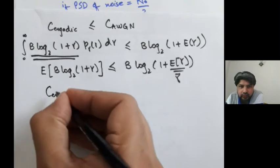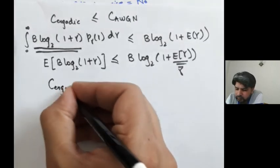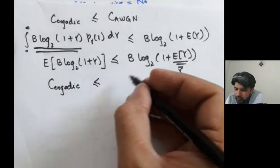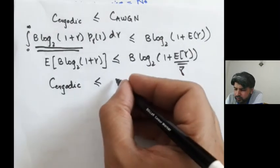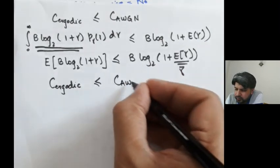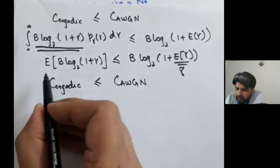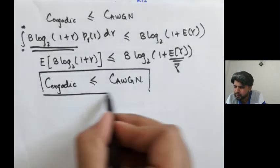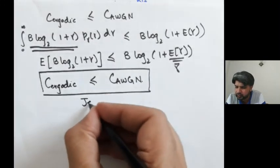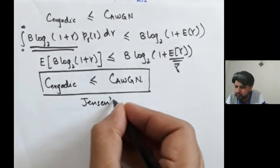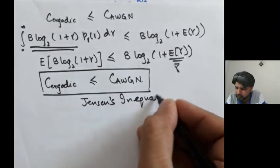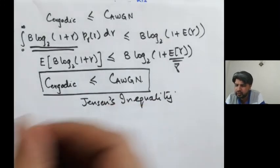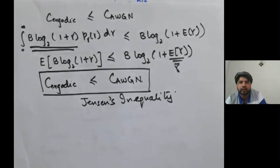C ergodic, which is on the left hand side, would be less than or equals to the capacity under AWGN condition.